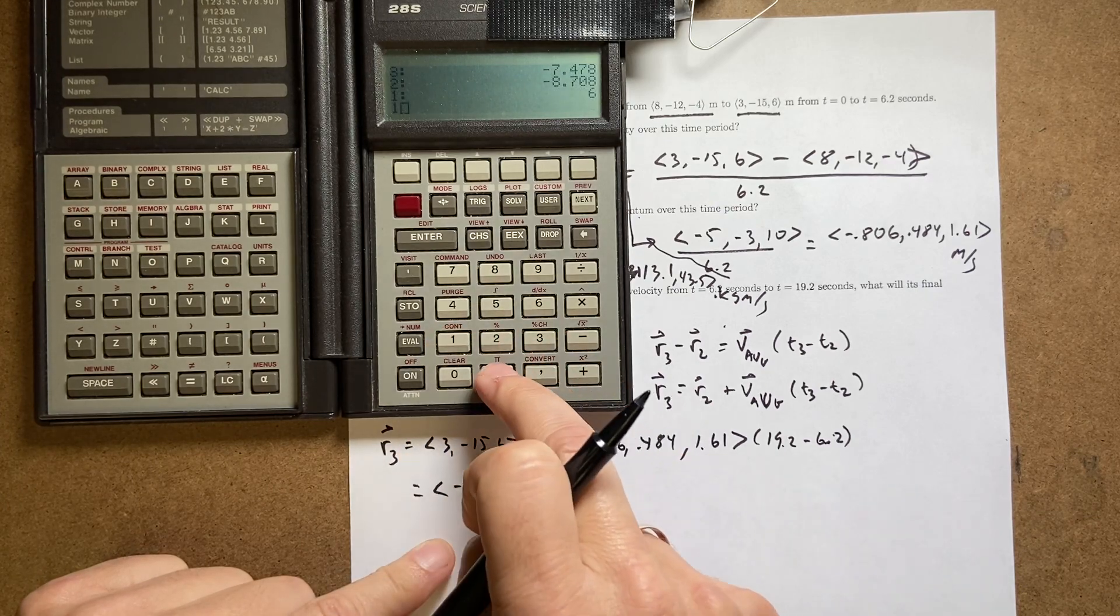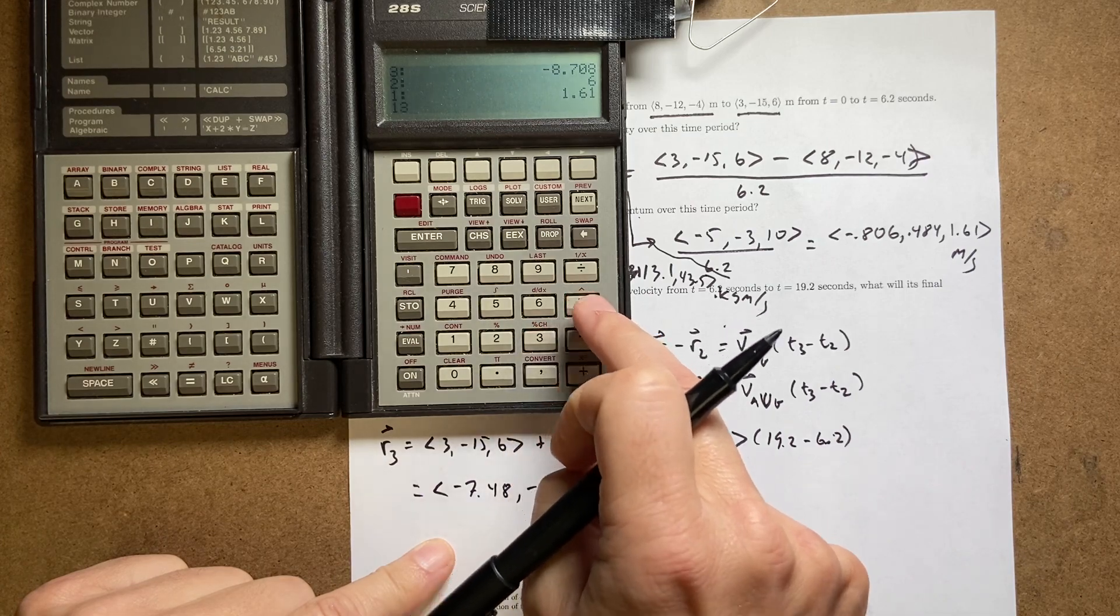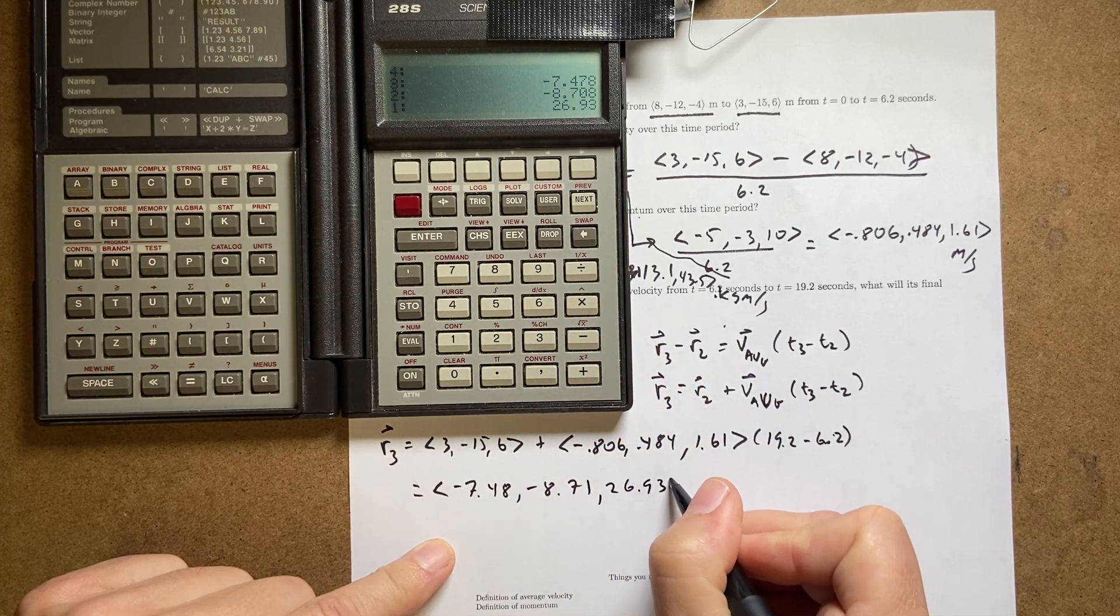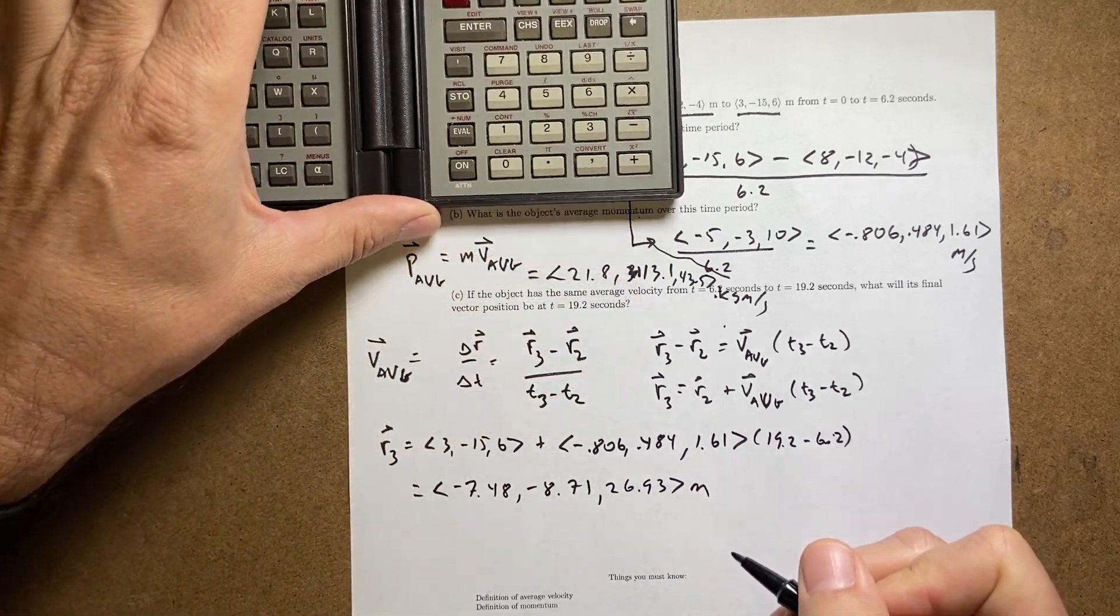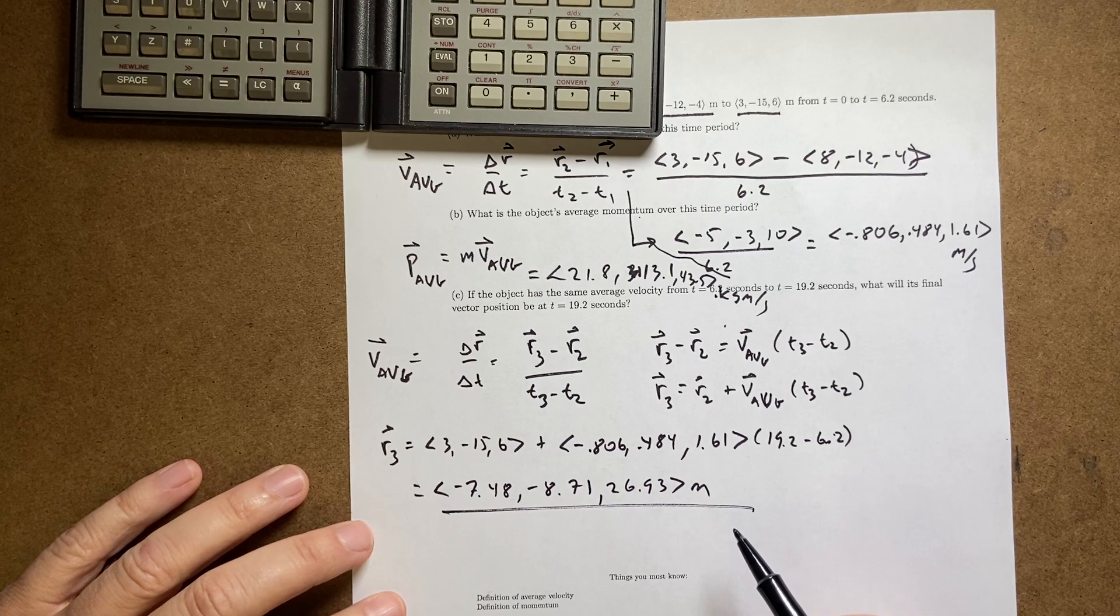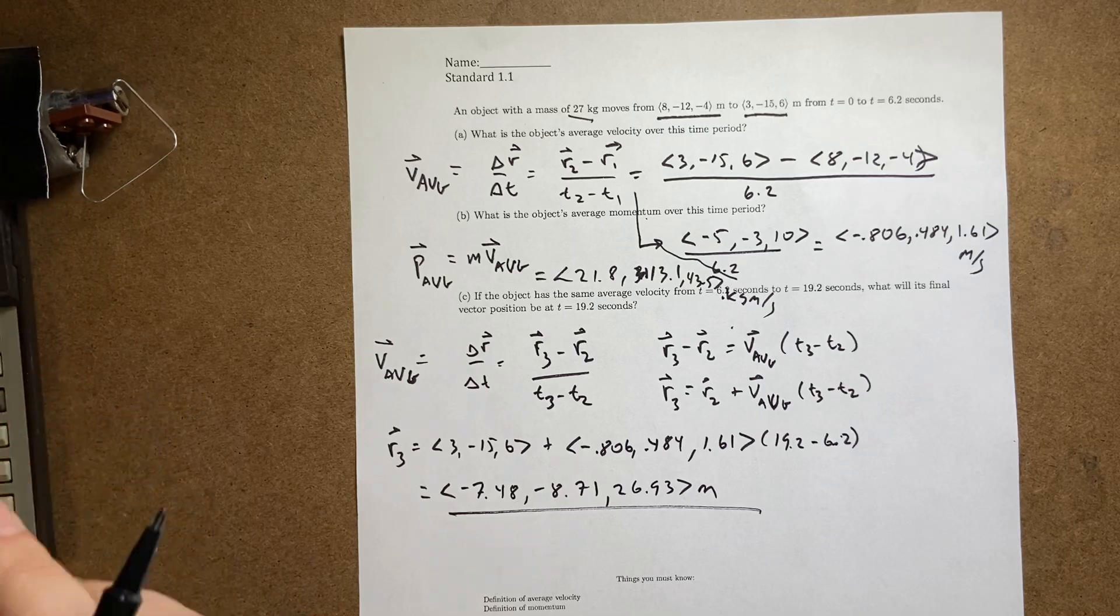And then finally my z is going to be 6, 1.61, enter, 13 times, plus, 26.93 meters. And that's the final position at 19.2 seconds. There you go. So there you go. Thank you.